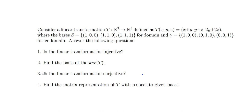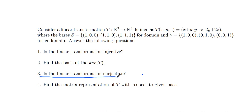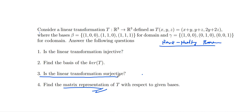Now let us discuss the third question: is the linear transformation surjective? To solve this we can use two methods — after finding the matrix representation of T we can conclude, or we can use the rank-nullity theorem. The rank-nullity theorem states: for a linear transformation T from V to W, rank(T) + nullity(T) = dim(V).